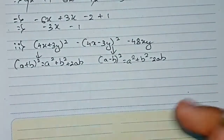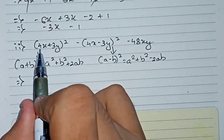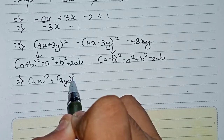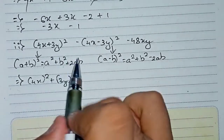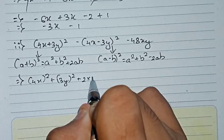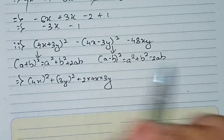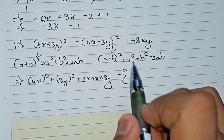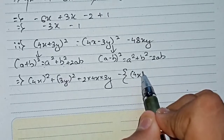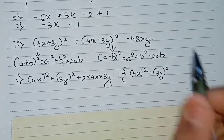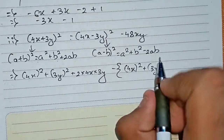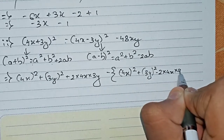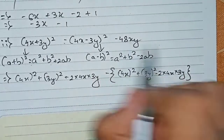According to these two formulas we put down the values. For the first bracket: a² means (4x)², plus b² means (3y)², plus 2ab means 2 into 4x into 3y. Then we give the minus, and for the second bracket: a² means (4x)², plus b² means (3y)², minus 2ab means 2 into 4x into 3y. Finally minus 48xy.